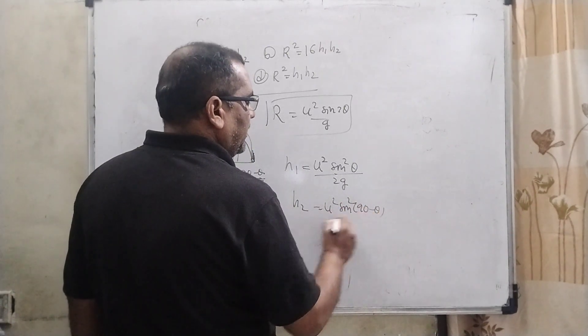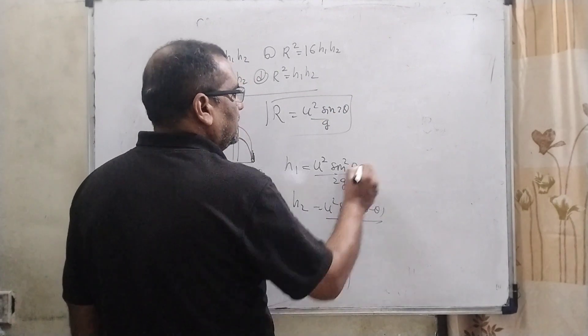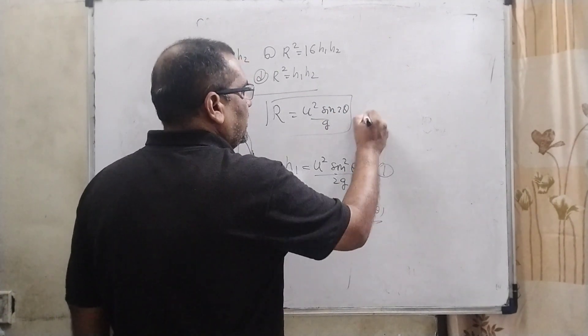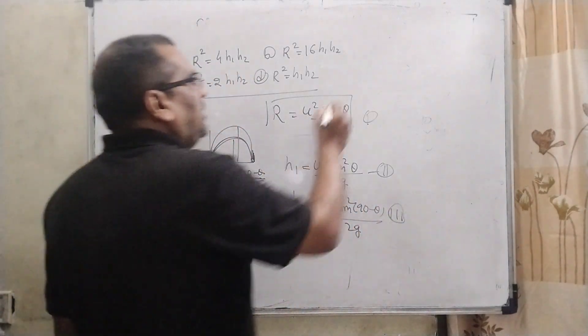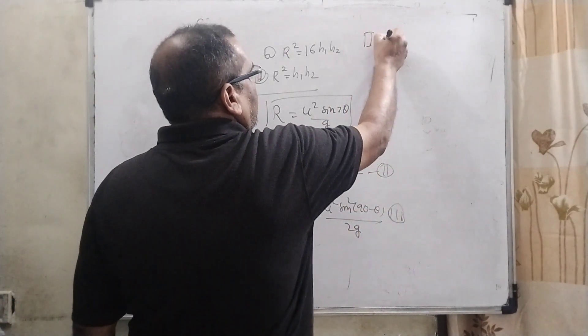So here sin square 90 minus theta upon 2g. It is the first equation, it is second equation and it is third equation. Now, multiply second and third. So we get h1 h2